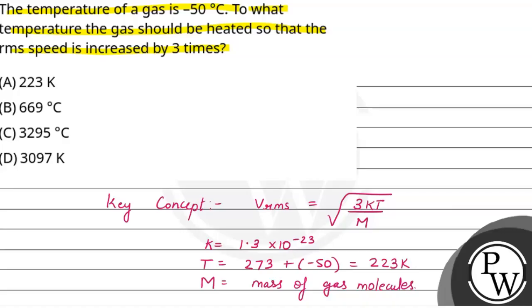अगर हम same gas को consider कर रहे हैं और temperature increase कर रहे हैं, तो VRMS temperature के root के directly proportional होगा. इस concept को question में apply करें: V1 by V2 is equal to root T1 by T2.